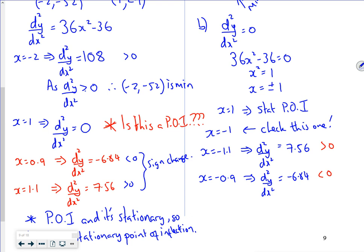With the sign change confirmed, if I substitute x = -1 into the original equation, I get y = -19. So (-1, -19) is a point of inflection. That's all done. Bye everyone.